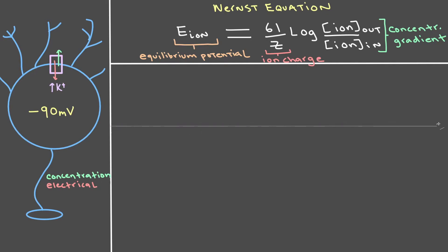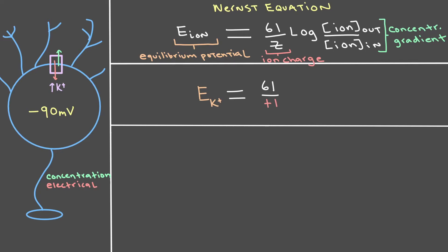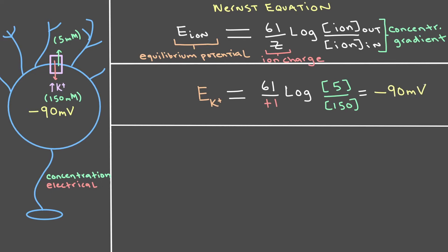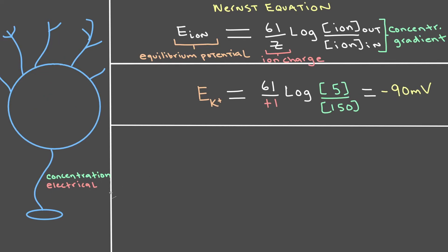Let's use this formula to calculate the equilibrium potential for potassium and prove that it is minus 90. We take the constant 61, divide by the charge of potassium which is positive 1, and take the log of the concentration gradient — potassium concentration on the inside is much higher than on the outside. Plugging that into the Nernst equation gives an equilibrium potential of minus 90 millivolts, exactly what we predicted.